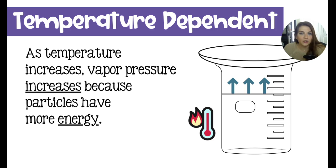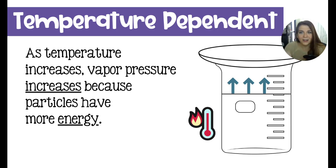Vapor pressure is temperature dependent. The hotter it is, the more willing these particles are to evaporate. This is why winter puddles take a longer time to dry up than summer puddles. If you have a rainstorm in the winter, those puddles are going to stay around for a much longer time. In the summertime, sometimes the ground is hot enough that you can actually see the water evaporating after a good rainstorm, because the ground increases the vapor pressure of the water very dramatically.